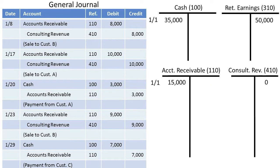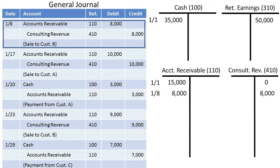Let's do that. On January 8th, a sale on account of $8,000 was made to customer B. By posting that to their respective accounts, we could then compute the new balance for total receivables and total consulting revenue.